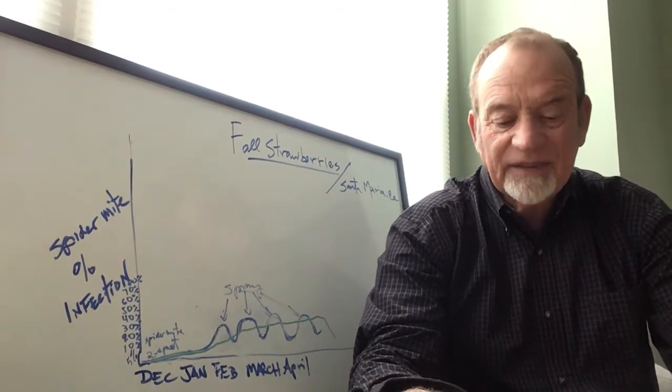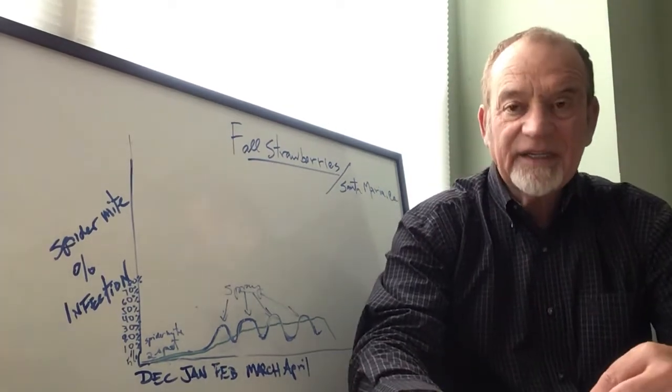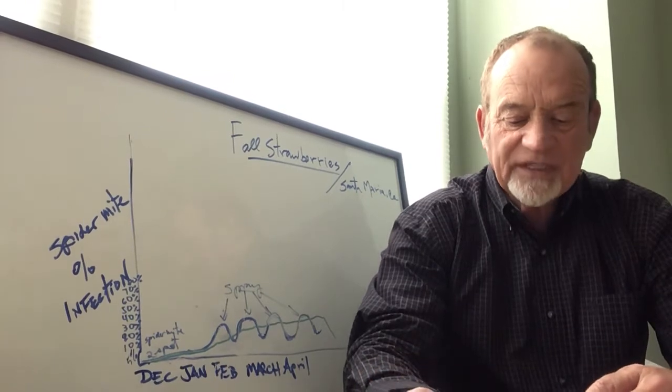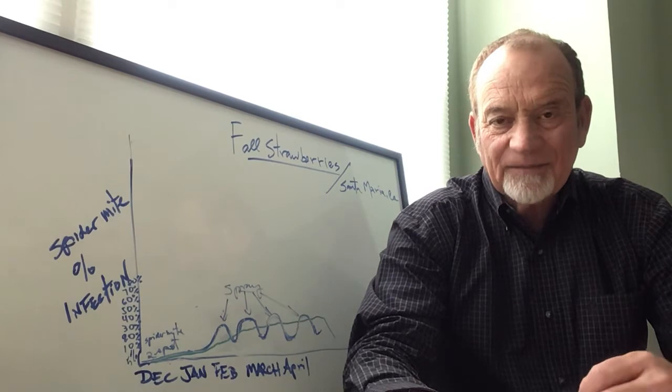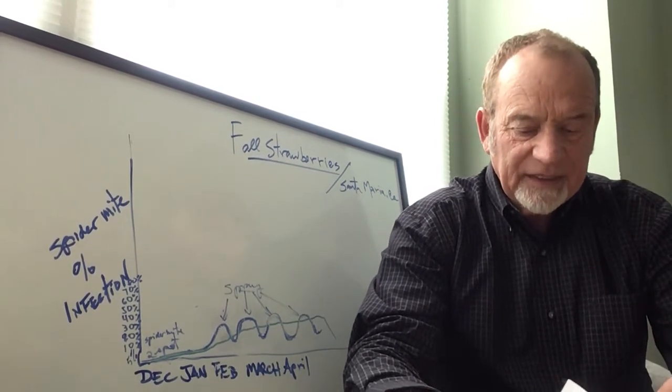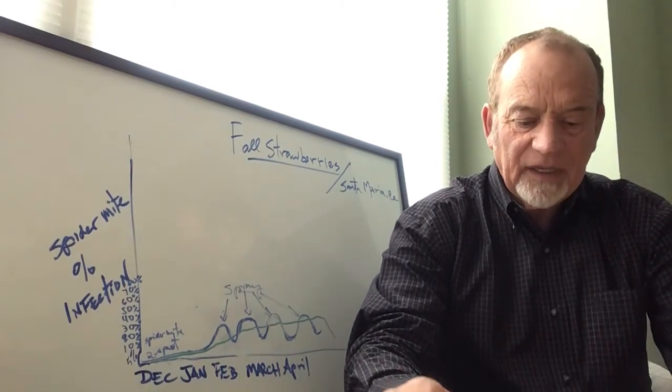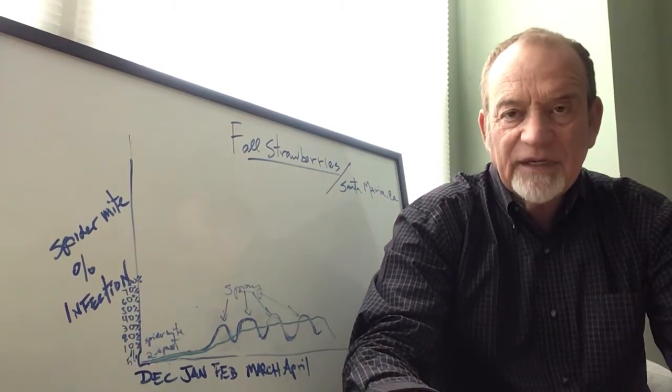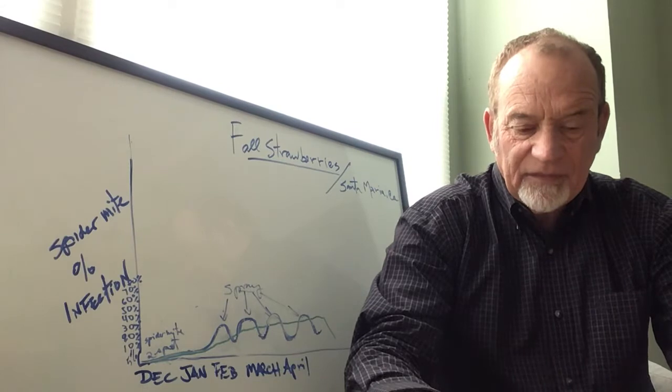With different release rates, the objective here is to establish predatory mites together with the two-spots as a preventative measure. The benefits of using predatory mites in combination with sprays can be significant.